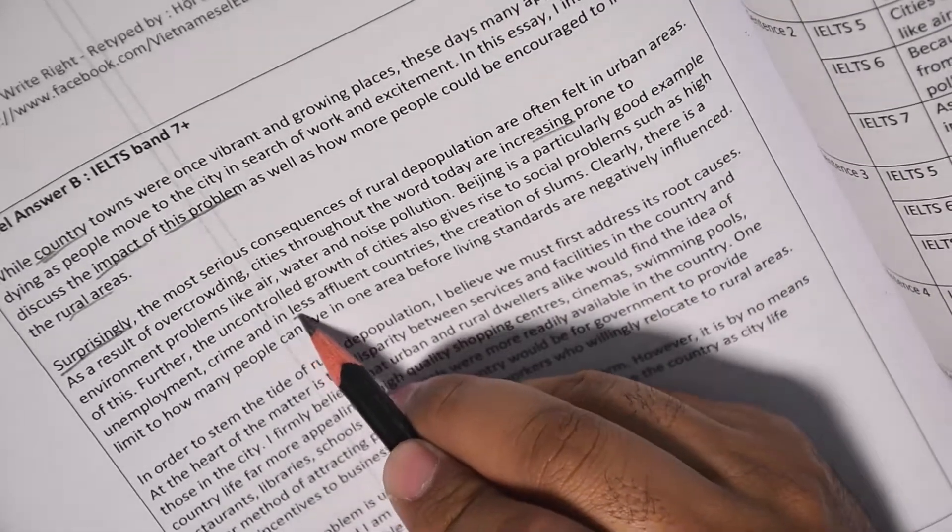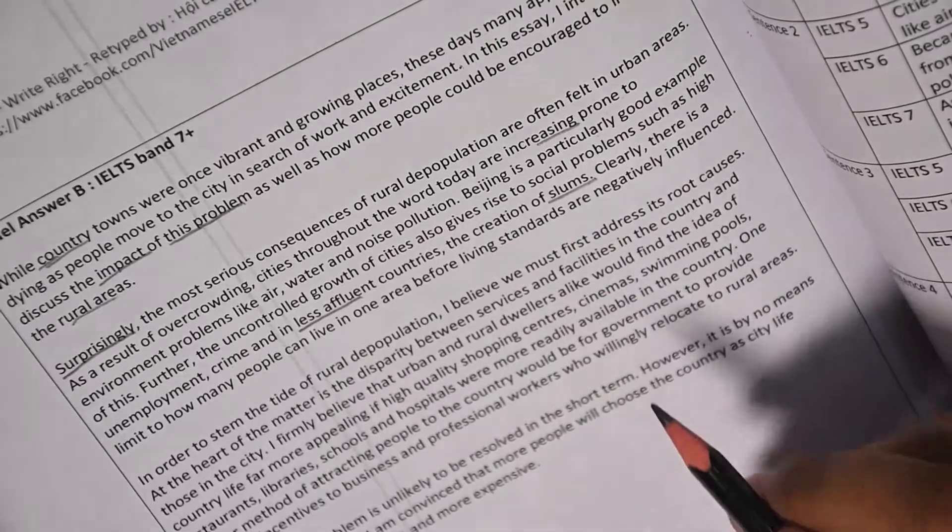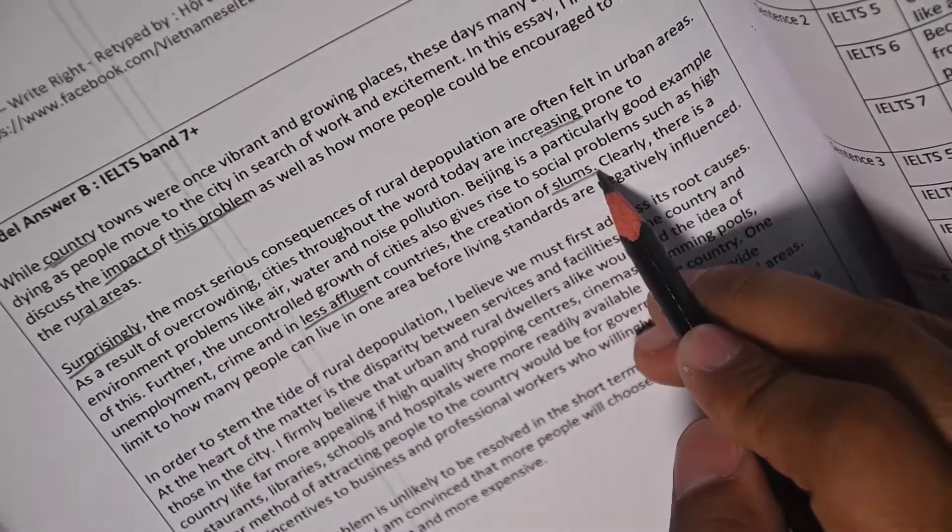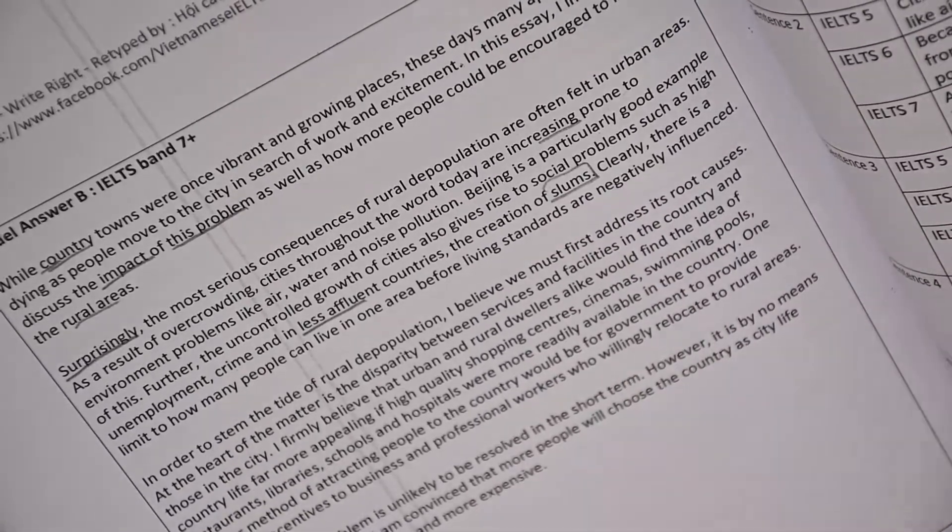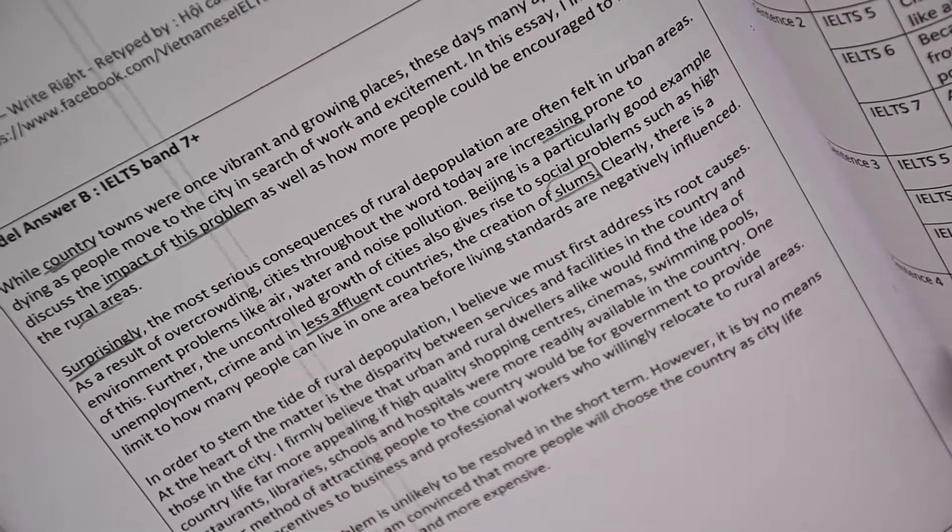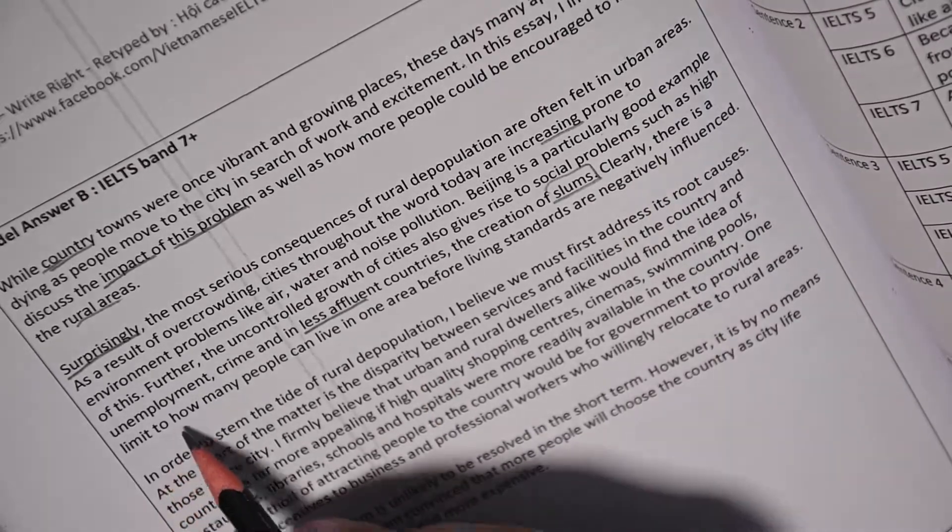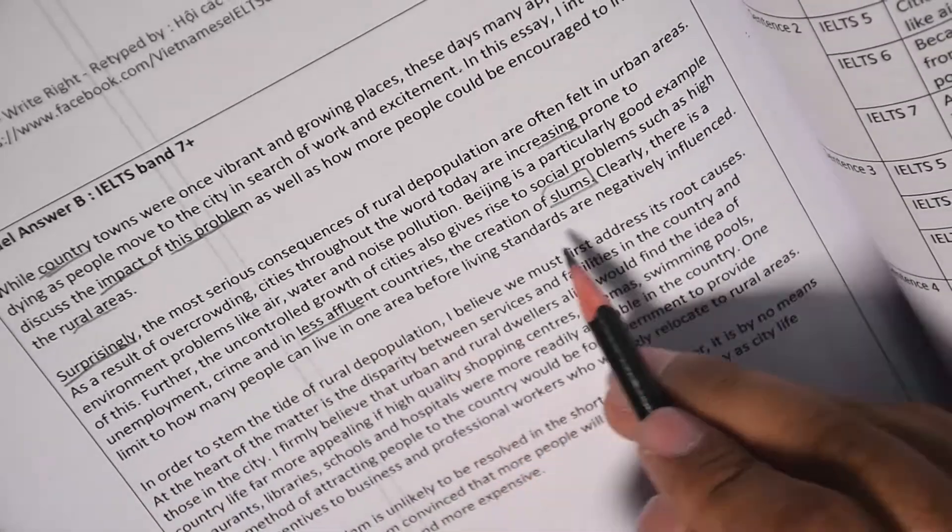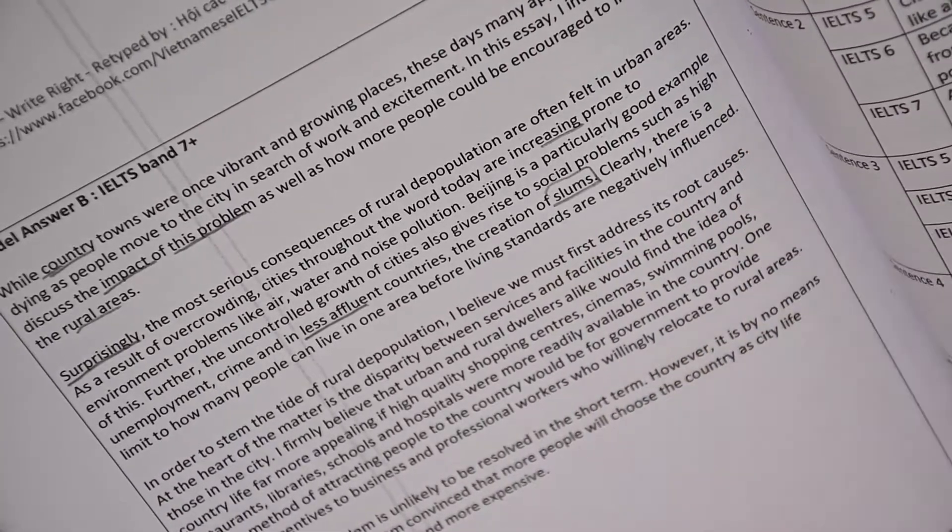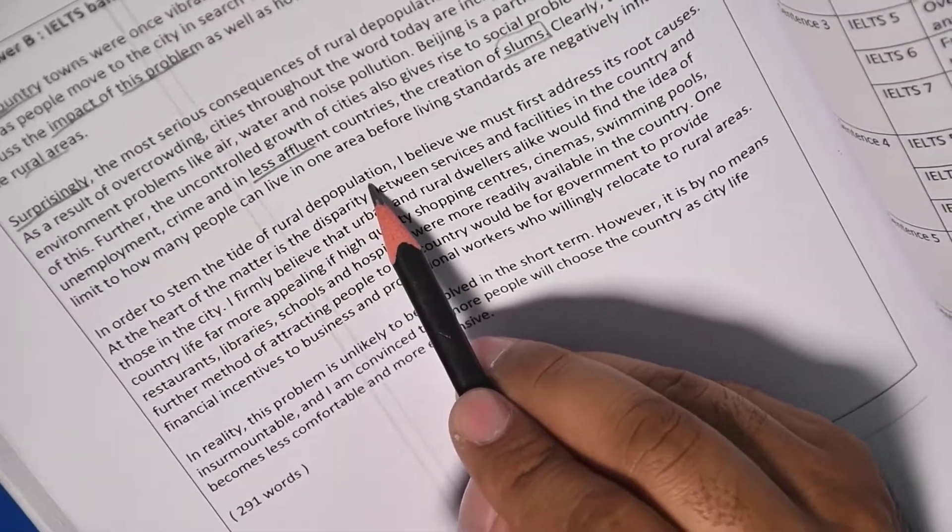Less affluent means less rich, and slums are the dwellings where people live under the poverty level and there are no facilities in slums. They're just some very bad houses and they're not capable of living in, but still people live there. Clearly there is a limit to how many people can live in one area before living standards are negatively influenced.